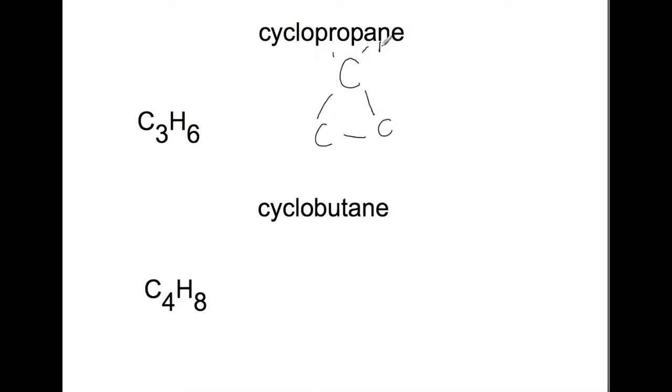Cyclopropane has three carbons in a ring and each of the carbons has two hydrogens attached. Cyclobutane has four carbons in a ring, and again, each of the carbons has two hydrogens attached to them.